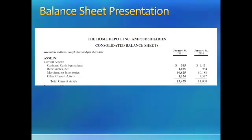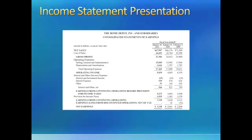Here we have Home Depot's consolidated balance sheet, and as we see, the first item listed on the balance sheet is cash and cash equivalents. Next, we have Home Depot's income statement. Take a few seconds and see if you can find the cash and cash equivalent on the income statement. Did you find it? It's not there — assets are reported on the balance sheet, not the income statement.